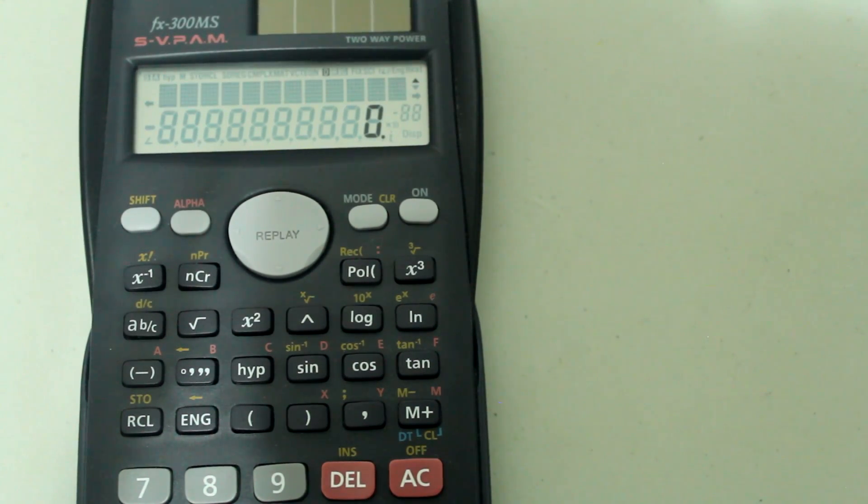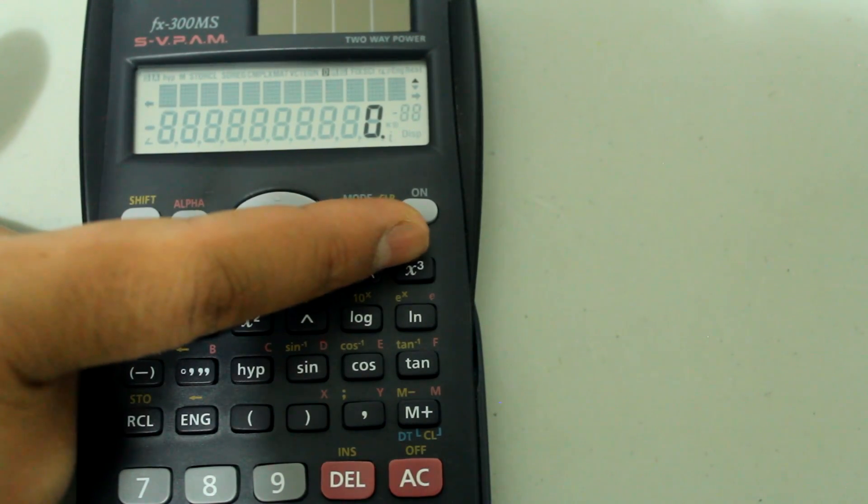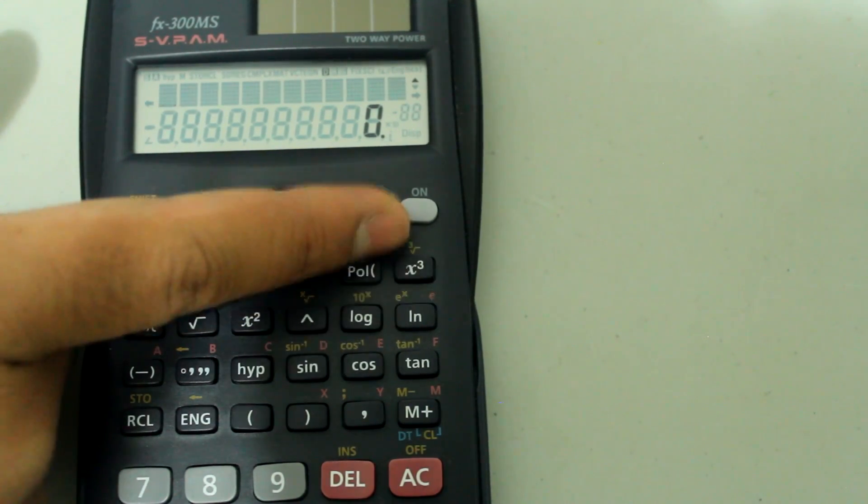Next, let's go over how to find the cube root of a number. Let's find the cube root of 27. If you look on your keypad, notice that there is a yellow cube root symbol above the X cubed button.